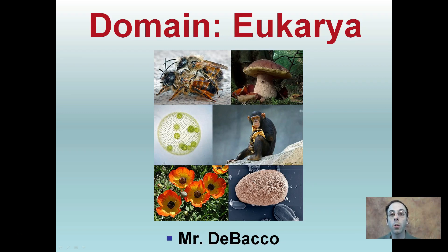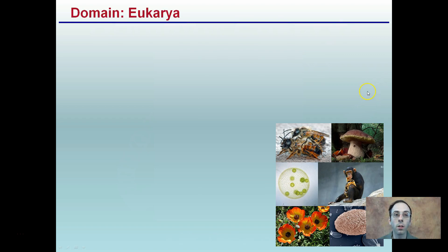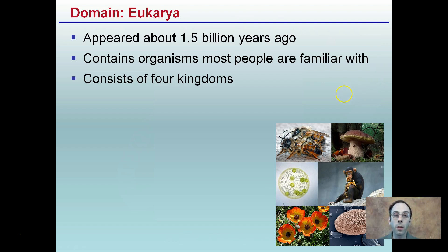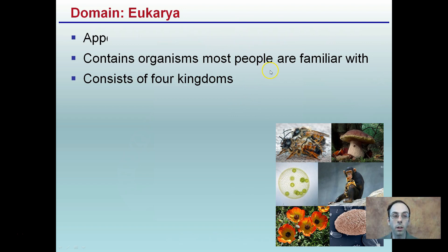Here we're going to investigate the domain Eukarya and provide some examples to show you how diverse this particular domain is. Starting with the basics, it appeared about 1.5 billion years ago. It contains organisms most people are familiar with, and they consist of four kingdoms below the domain.